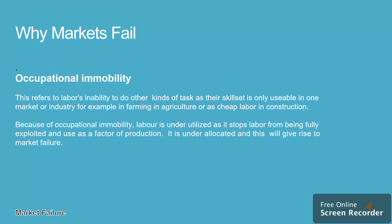Occupational immobility refers to labor's inability to perform other kinds of tasks, as their skill set is only usable in one market or industry — for example, in farming or as cheap labor in construction. Because of occupational immobility, labor is underutilized, stopping it from being fully exploited as a factor of production. It is under-allocated, and this will give rise to market failure.